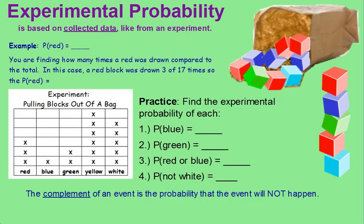Probability can be based on an experiment, and we call this experimental probability. For example, here's a table of someone doing an experiment of pulling blocks out of a bag and putting them back in.